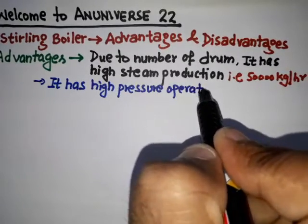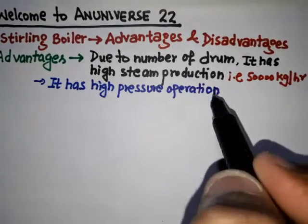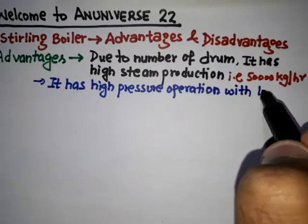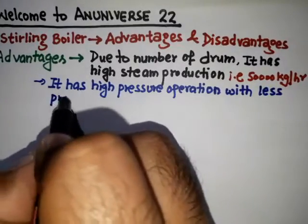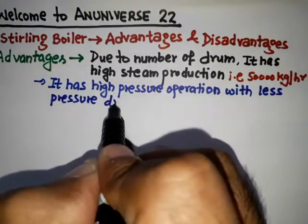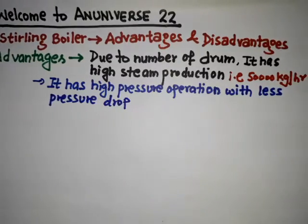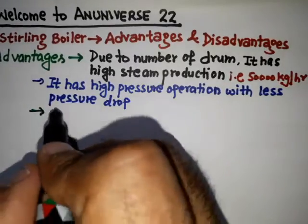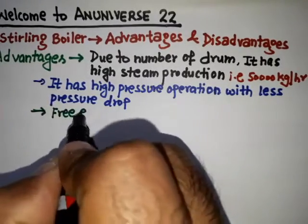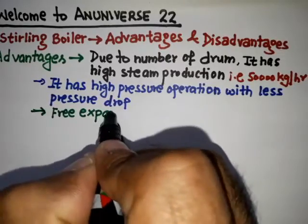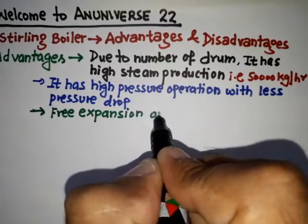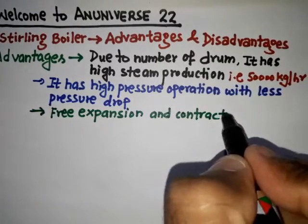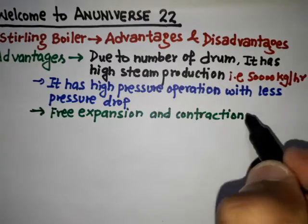The second advantage is that it has high pressure operation. The pressure range for this boiler is approximately 60 bar maximum, with less pressure drop.